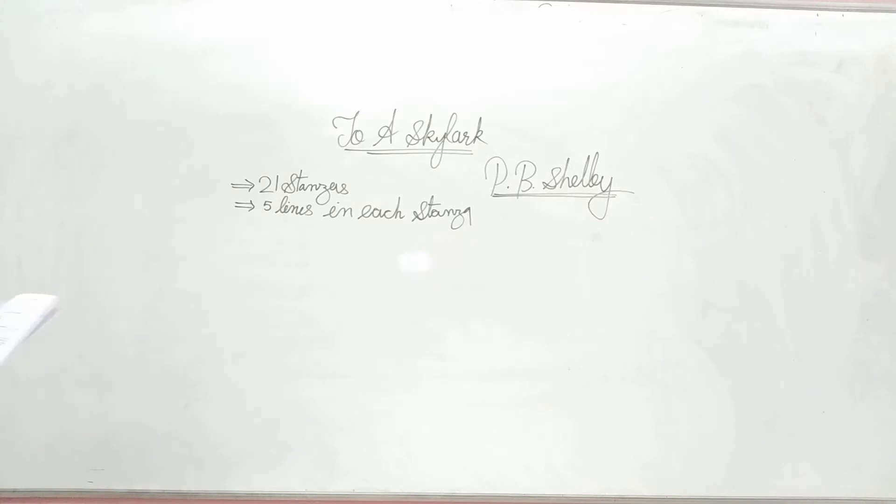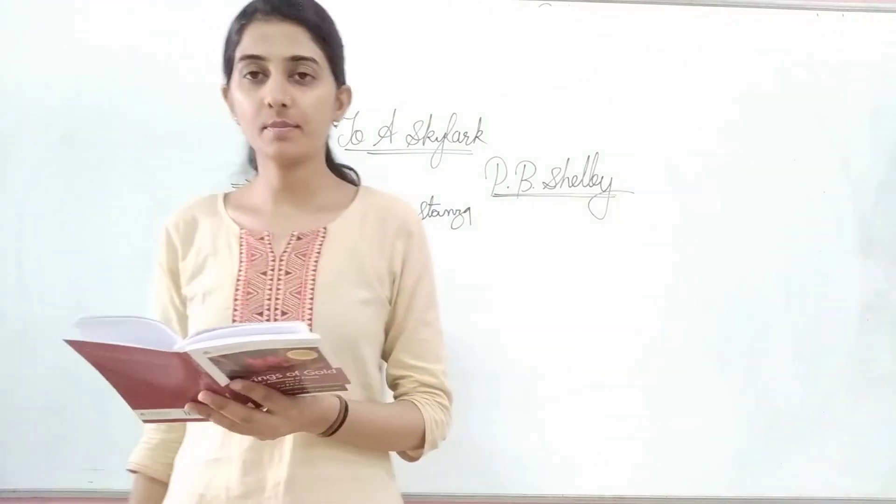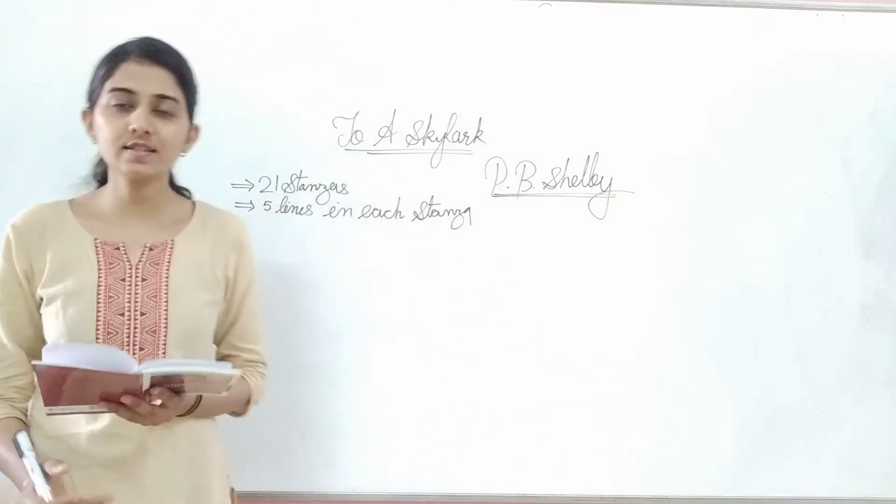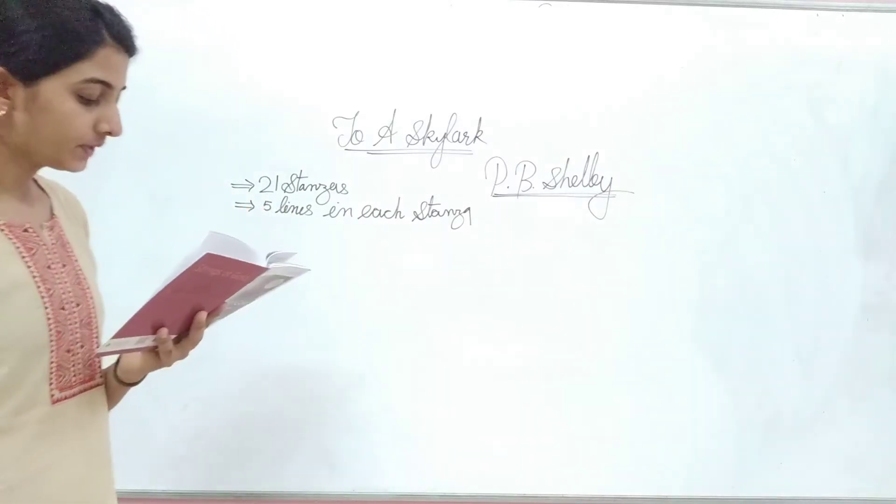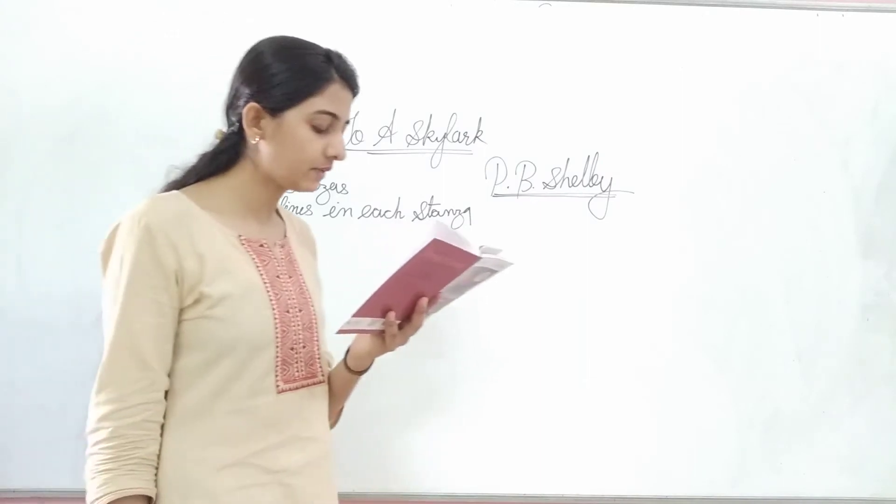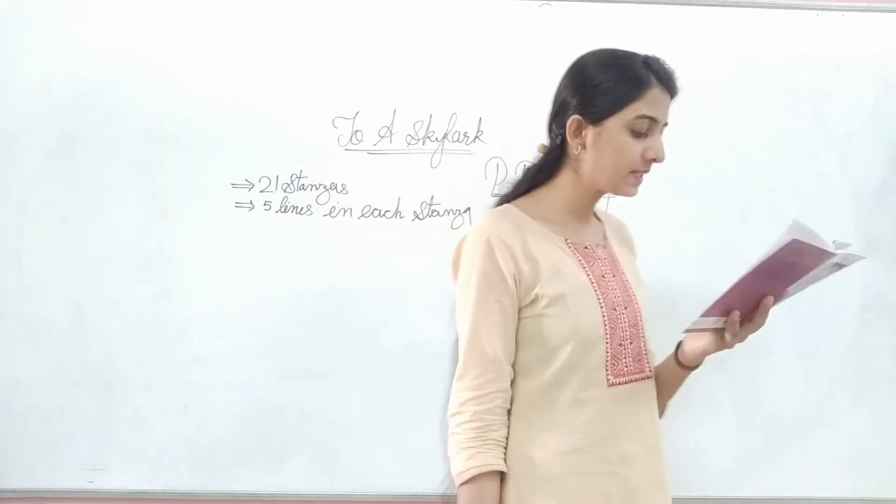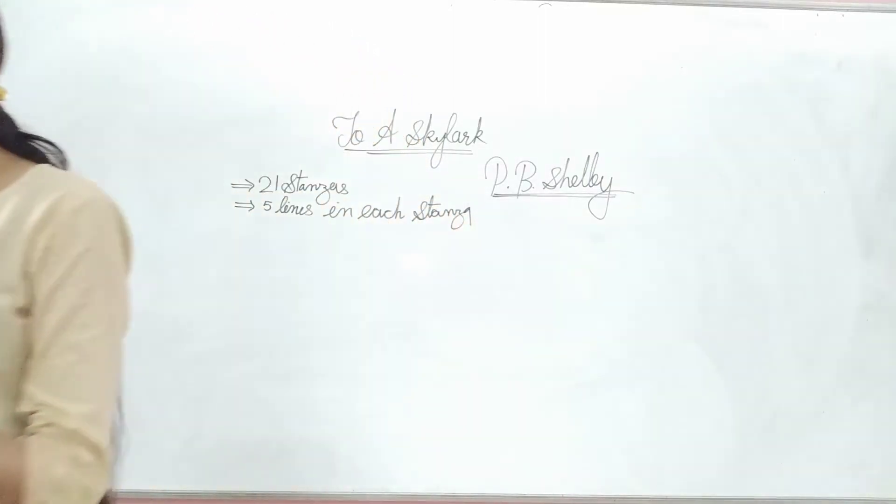Let's complete the last stanzas. Here, the text says: 'If we could scorn hate and pride and fear, if with such could not scorn to shed a tear.' What is the poet saying?